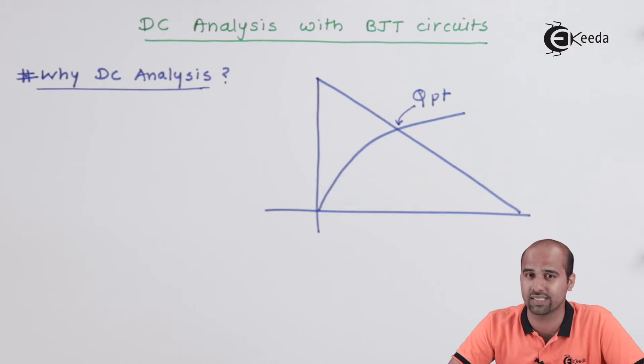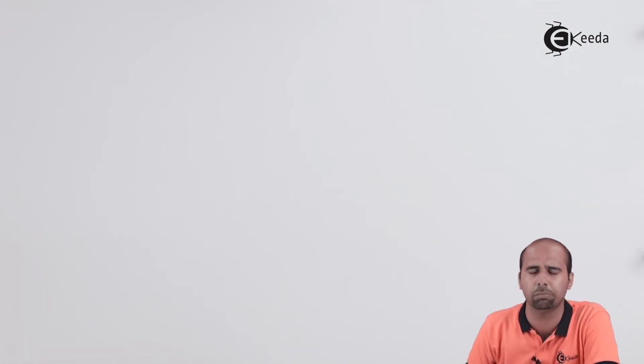Let's learn the concept of DC analysis mathematically. We will initially consider the potential divider bias network. Most of the time we will encounter the potential divider bias network or the fixed bias network, but the DC analysis steps will be the same for any biasing configuration.